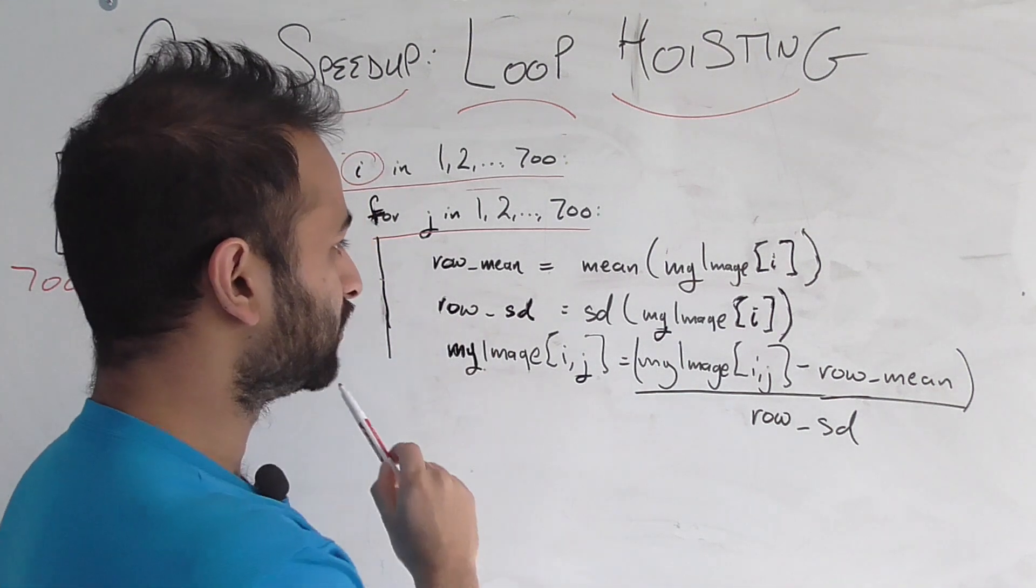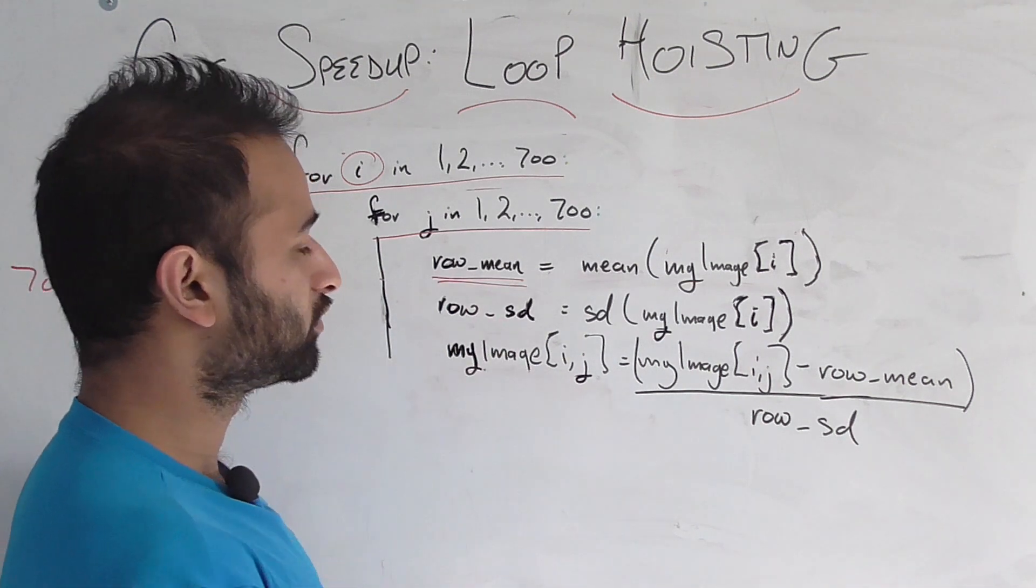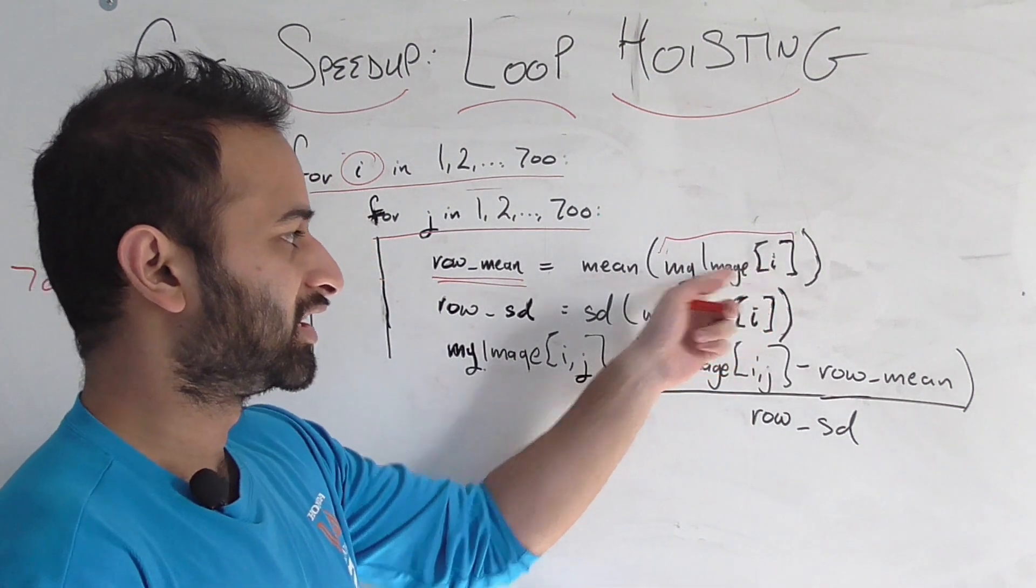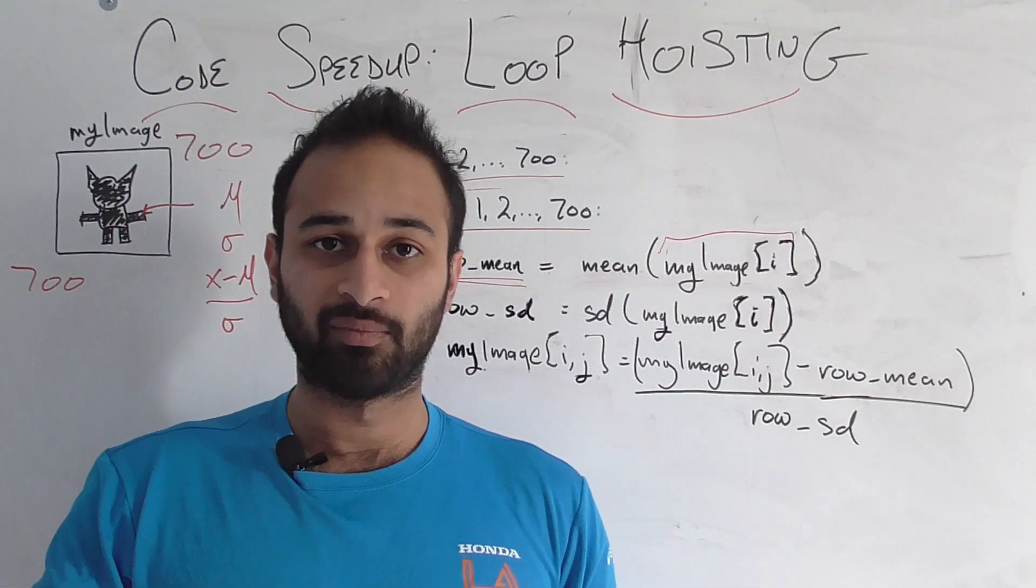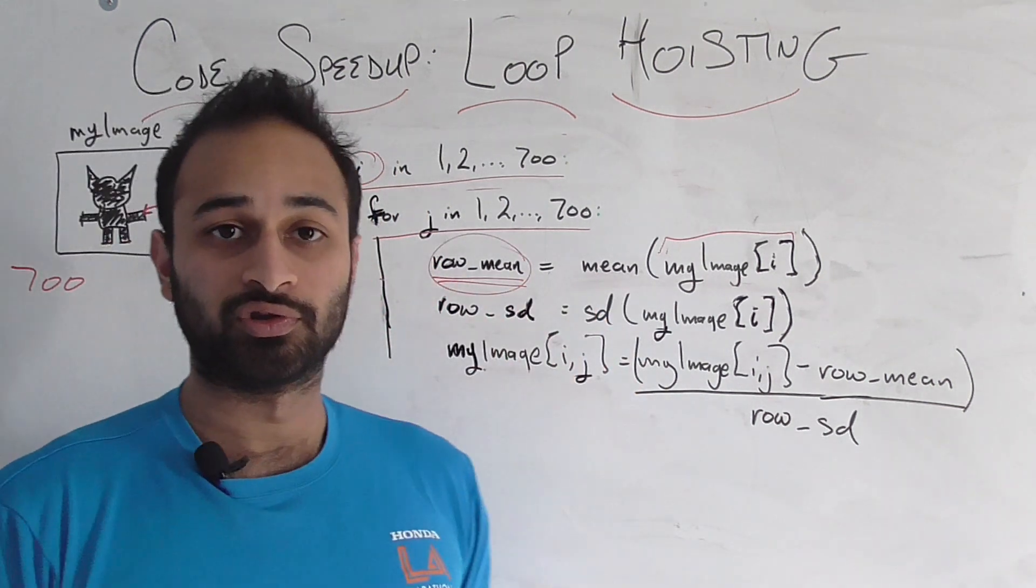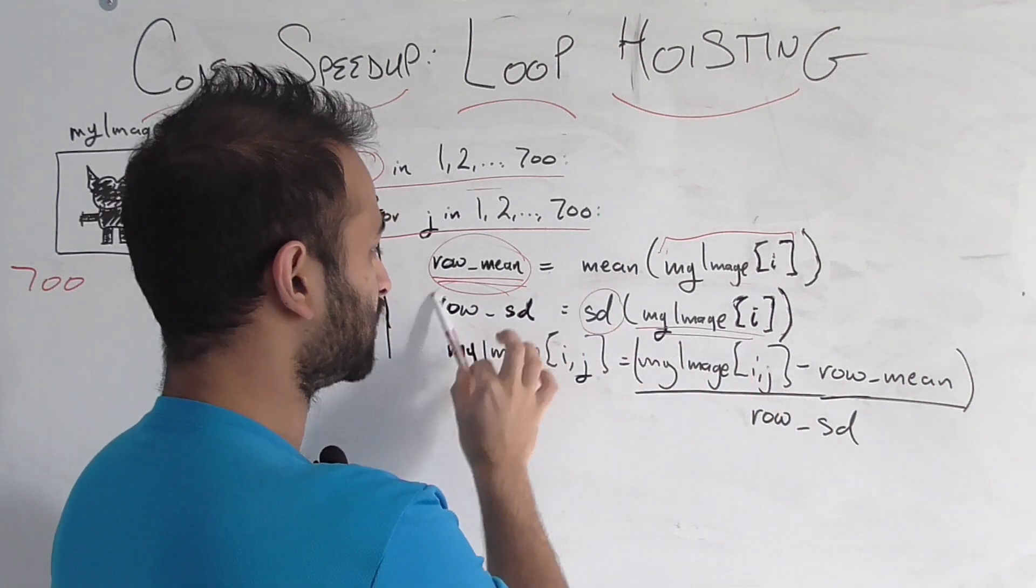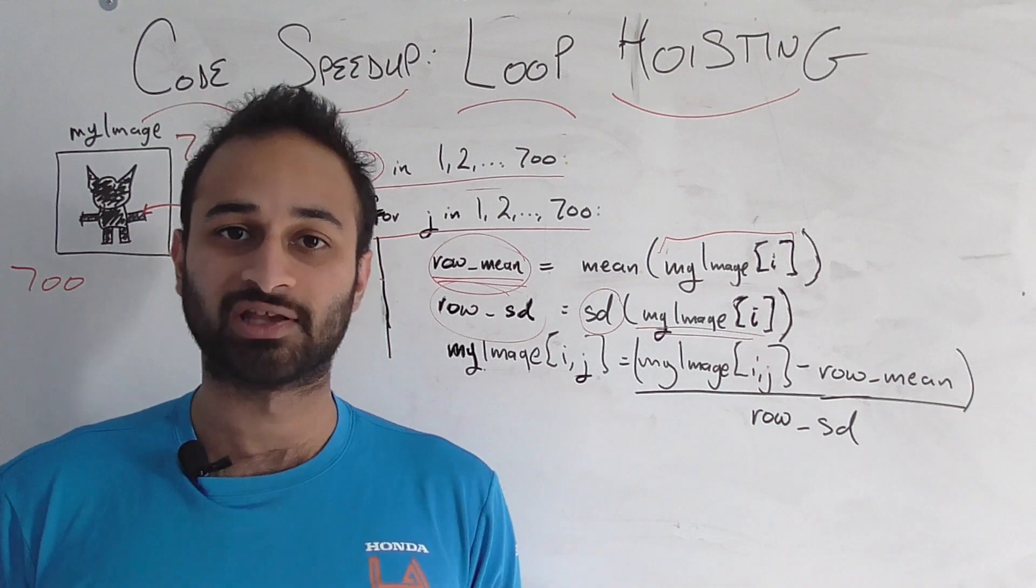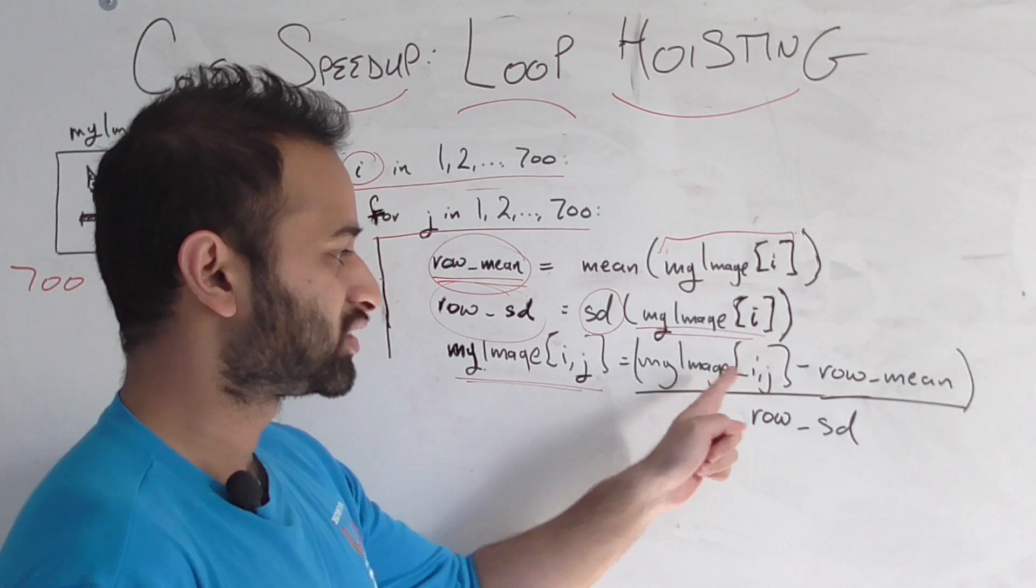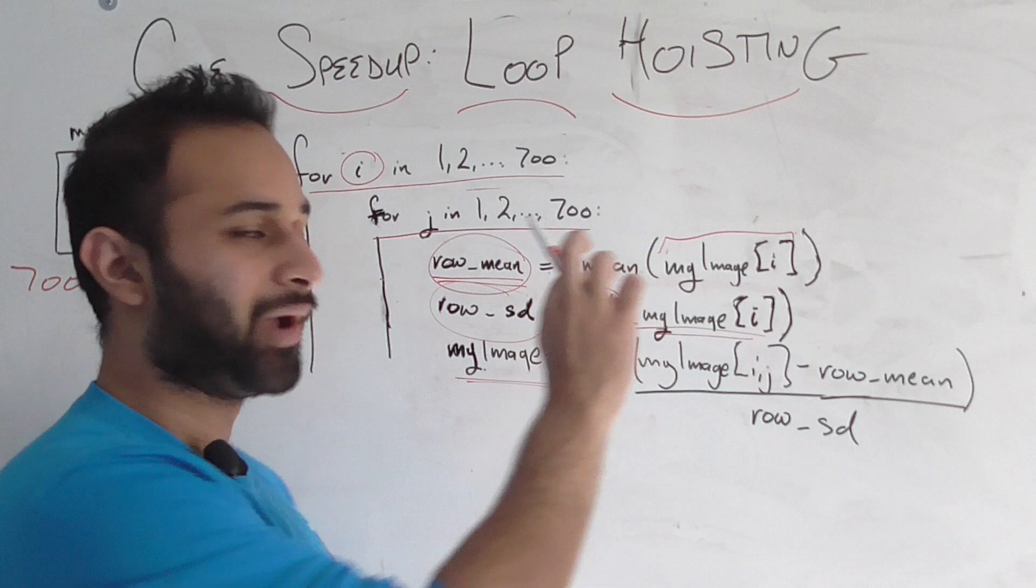Now for any given pixel, we have a little bit of work to do. We'll calculate the mean of the row that the pixel belongs to. So this my image at index i is basically saying give me the ith row of my image and take the mean of it, store that mean in this variable called row mean. Do the same thing for standard deviation. For the ith row of the image, take the standard deviation and store it in a variable called row sd, row standard deviation. And then simply for this given pixel, just take it, subtract the mean of its row, divide by the standard deviation of its row, and store that transform value back into the pixel.